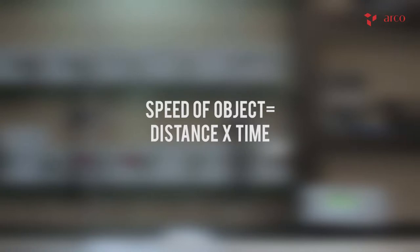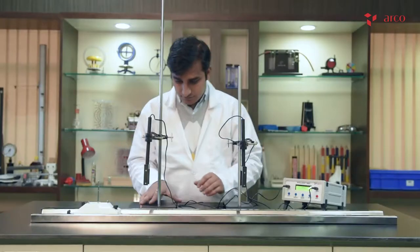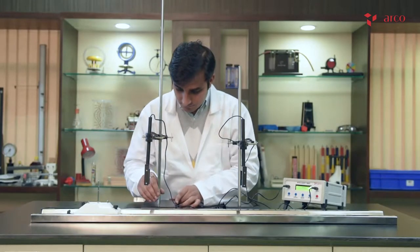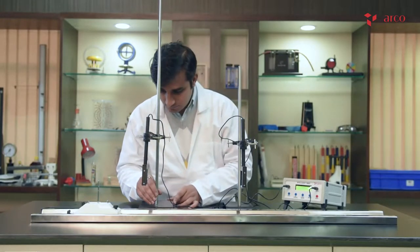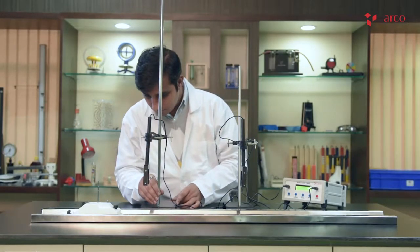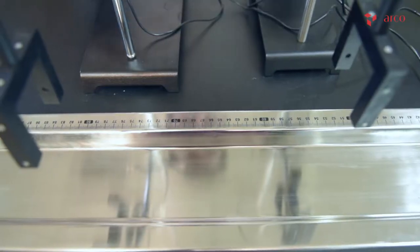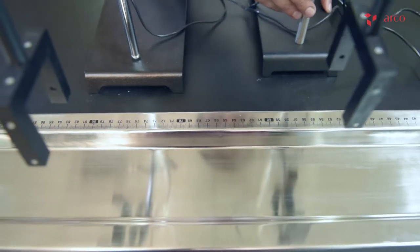To find the speed of the object, we need two things: first is distance and second is time. So we will place these photo gates at a fixed distance of 200 mm.